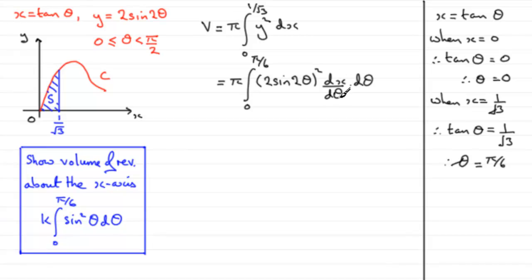We also need dx by d theta. So, we'll do that as well. Whilst we're here, we can say, also, dx by d theta. Let's just put it down here. If we differentiate x, which equals tan theta with respect to theta, then the differential tan theta is sec squared theta, the equivalent of 1 over cos squared theta. So, we can think of that as 1 over cos squared theta.